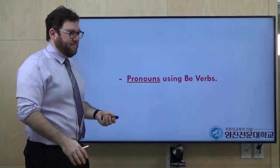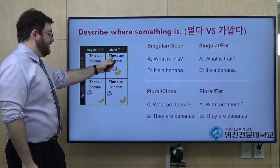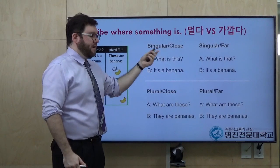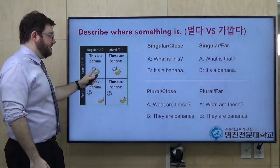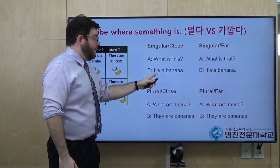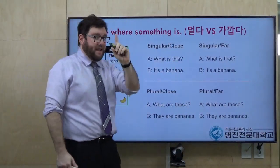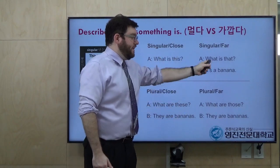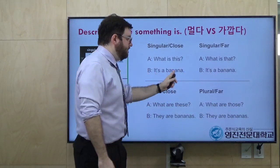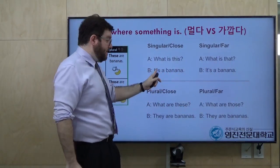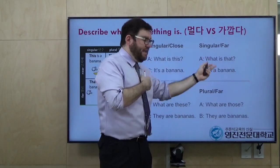Now let's look at some more pronouns using B-verbs — these pronouns are a little tricky. This is the difference between this, these, that, and those: singular and close (가깝다) versus far (멀다). What is this? It's a banana — the pronoun, the B-동사, and then banana. And if the banana is far, you ask: what is that? It's a banana. The answer is the same.